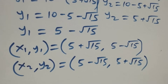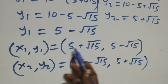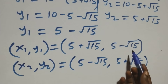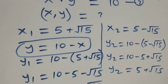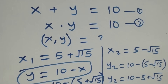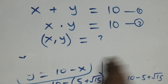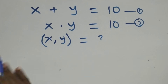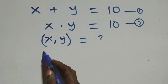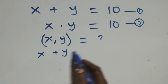Looking at these two solutions, the value of x in the first solution is the value of y in the second, and vice versa. We can check if these satisfy the given problem. From equation one, we substitute the values of x and y: x plus y equals to ten.